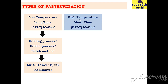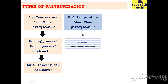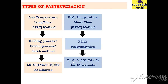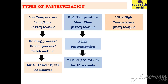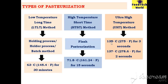The second method is the High Temperature Short Time method — HTST, also known as flash pasteurization. It requires 71.8°C for only 15 seconds. The third method is Ultra High Temperature — UHT. It requires either 135°C for 3 seconds or 137°C for 2 seconds only, and it extends the shelf life of milk up to 90 days.